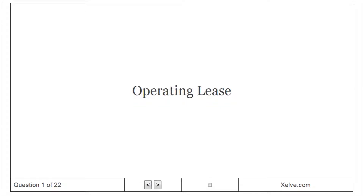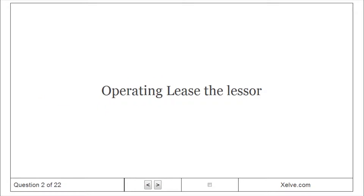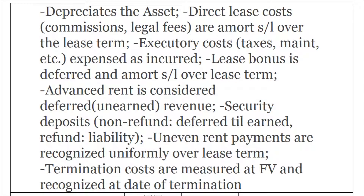Operating lease: a lease where the rights and risks of ownership don't transfer. Operating lease — the lessor depreciates the asset. Direct lease costs are amortized straight-line over the lease term. Executory costs are expensed as incurred.